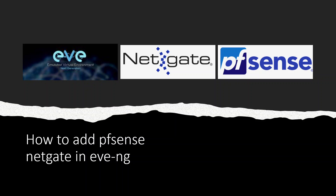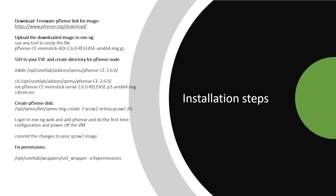The pfSense link is free, so you can go to the website — just search in Google for pfsense.org or 'pfSense image download' and it will redirect to the page where you will be able to download the software. Once you download it, use 7-Zip or unzip to extract the image inside the .gz file.